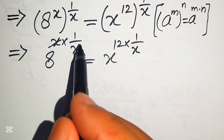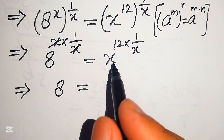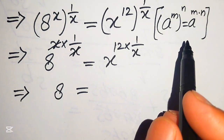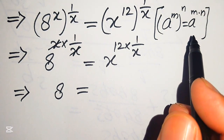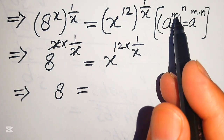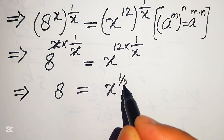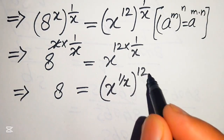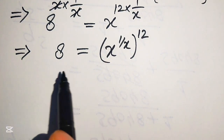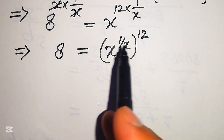Now you see here x is cancelled out by this x, and we get 8 on the left-hand side, and on the right-hand side we have x to the power of 12 times 1 over x. We again apply this exponent law, but this time from right-hand side to left-hand side. We write these terms in exponent form by moving 1 over x inside the term, and it becomes x to the power of 1 over x, and its whole power is 12.